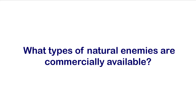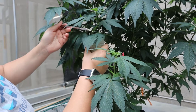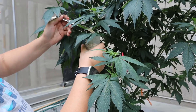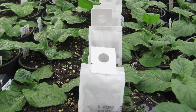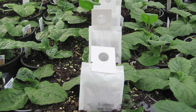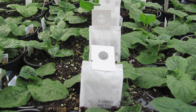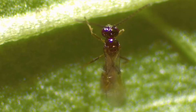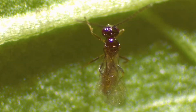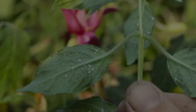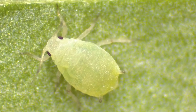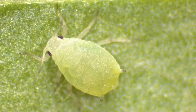What types of natural enemies are commercially available? Some of the more commonly used natural enemies include predatory mites for thrips and spider mites, host-specific parasitic wasps for whiteflies and aphids, and nematodes for fungus gnats.